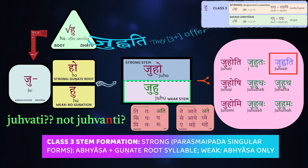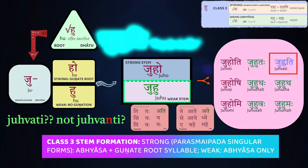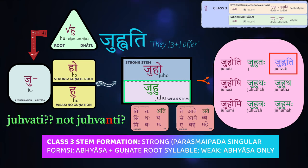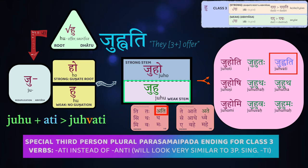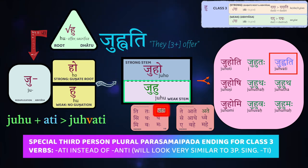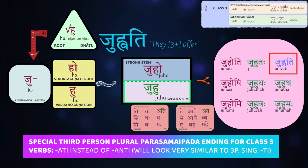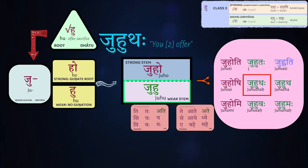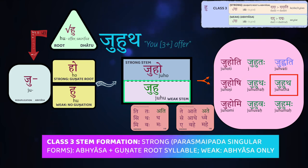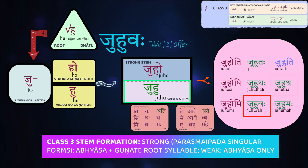Wait — did I make a mistake? Shouldn't it be juhvanti? It turns out the third gana has one extra twist: for the third person plural (pratama purusha bahuvachana parasmaipada), we lose the N in the ending, so it's just -ati, not -anti. Very confusing, but it's all part of Sanskrit grammar. So juhvati means 'they offer.' All the others are quite regular: juhutaḥ — 'you both offer,' juhutha — 'you plural offer,' juhuvaha — 'we both offer,' juhumaha — 'we all offer.'